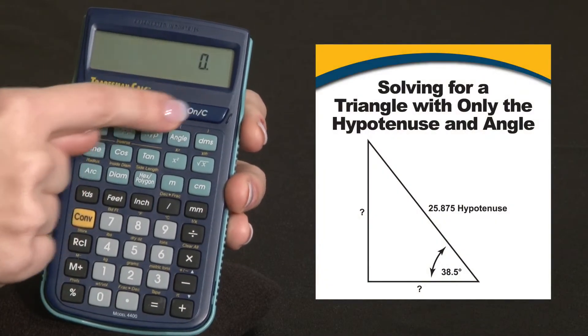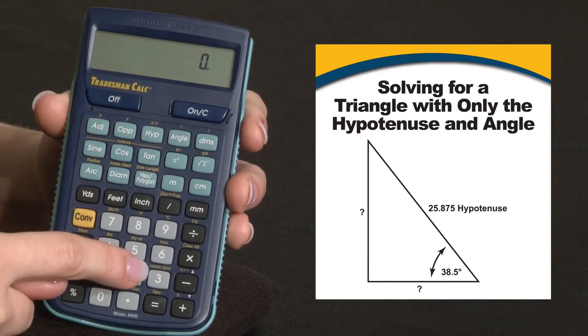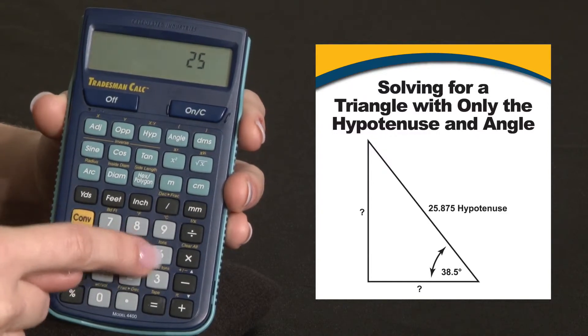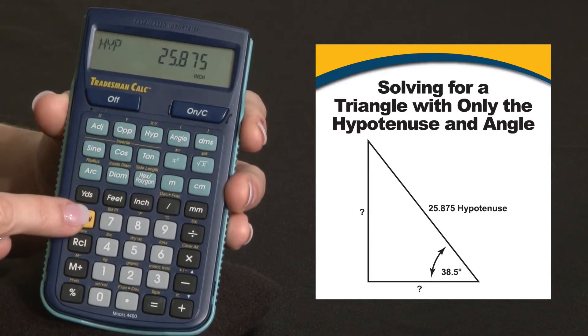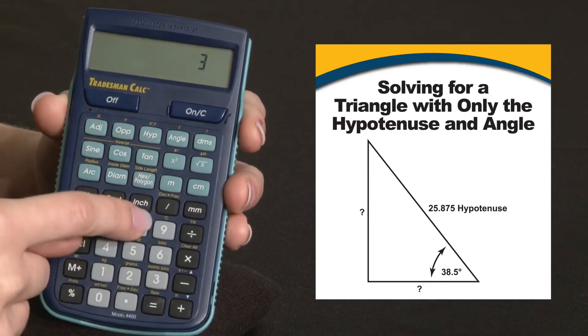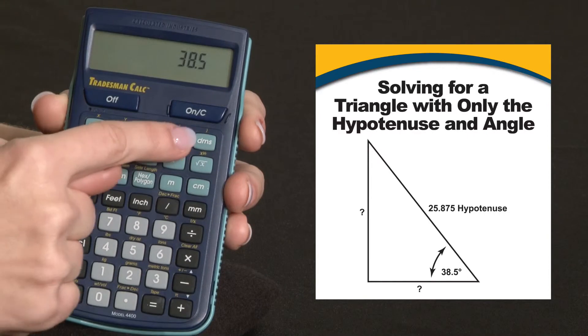Or if you're given the hypotenuse and an angle, you just enter them. Let's try 25.875 for the hypotenuse, and 38.5 degrees for the angle.